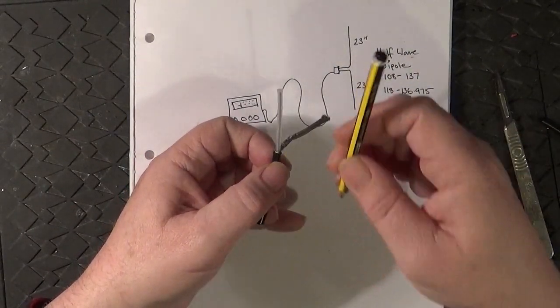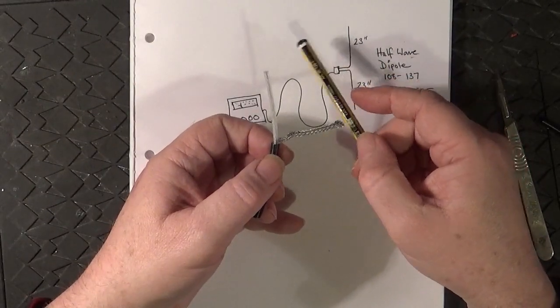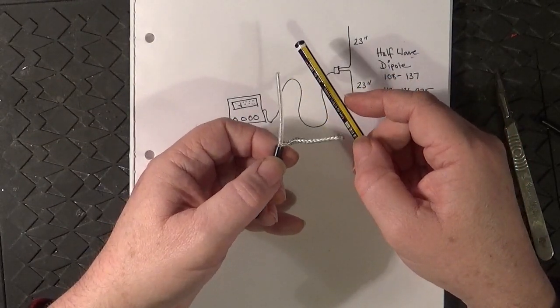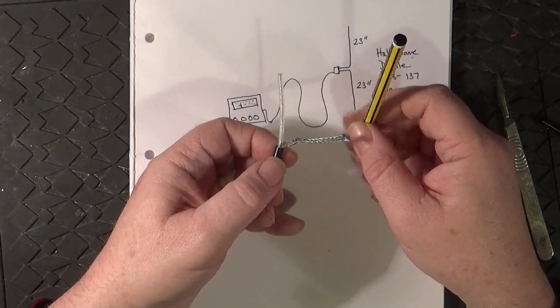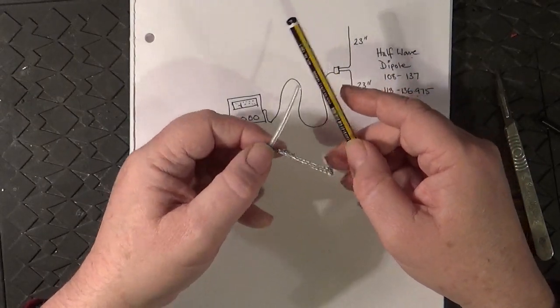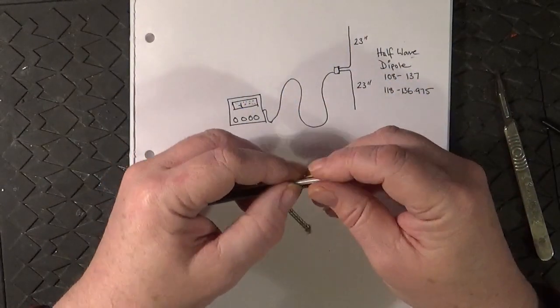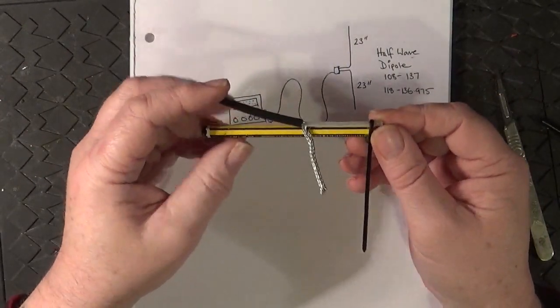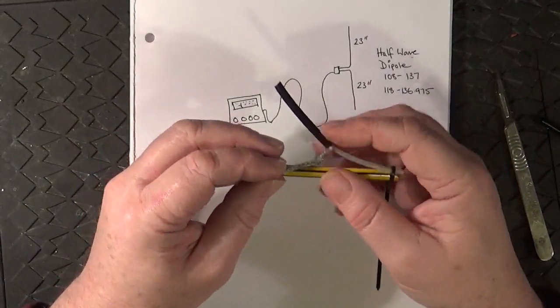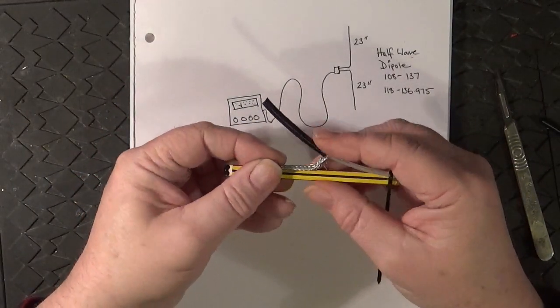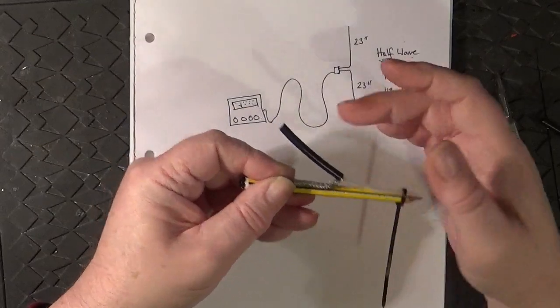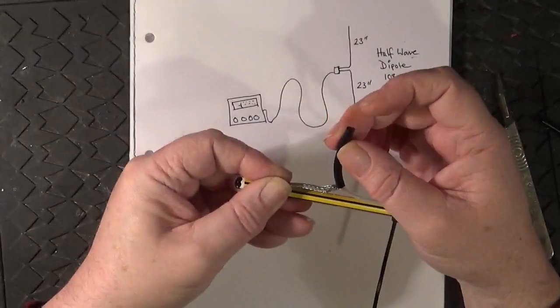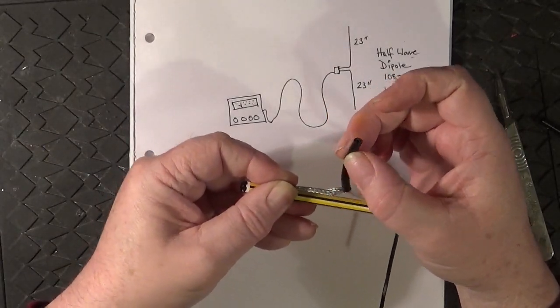All you do is take a bamboo cane or a bit of PVC pipe, something that's non-conductive, and zip tie it to the bamboo cane. This is obviously just a model. Each leg is zip tied flat, and then this becomes your lead out to your radio.